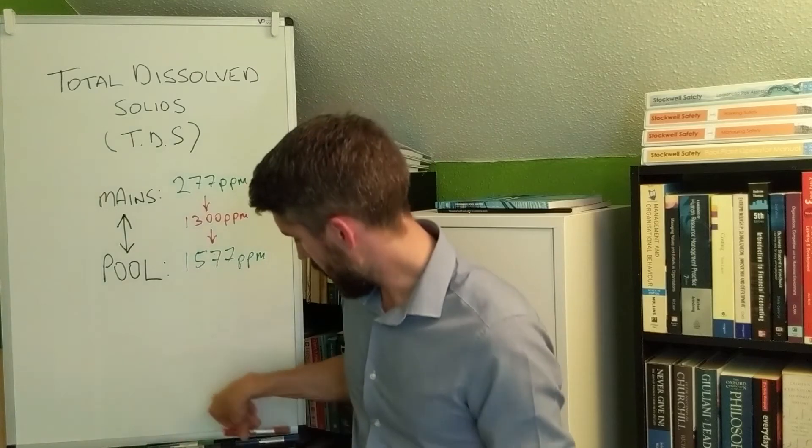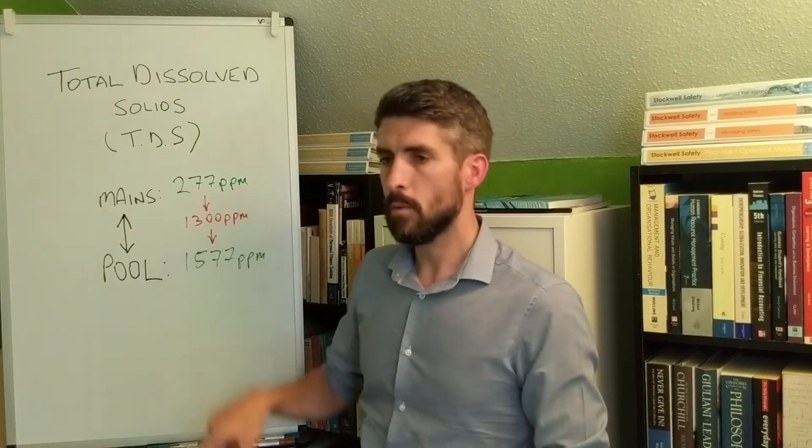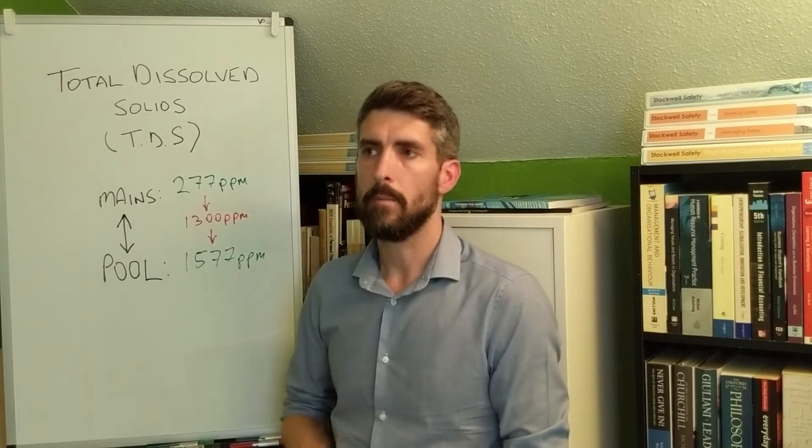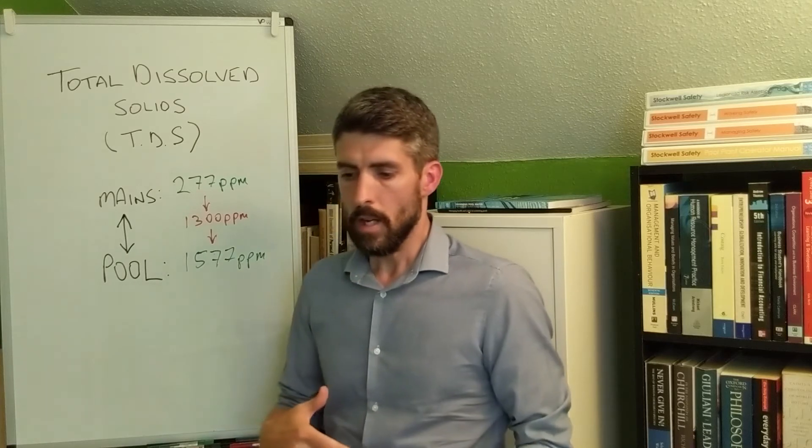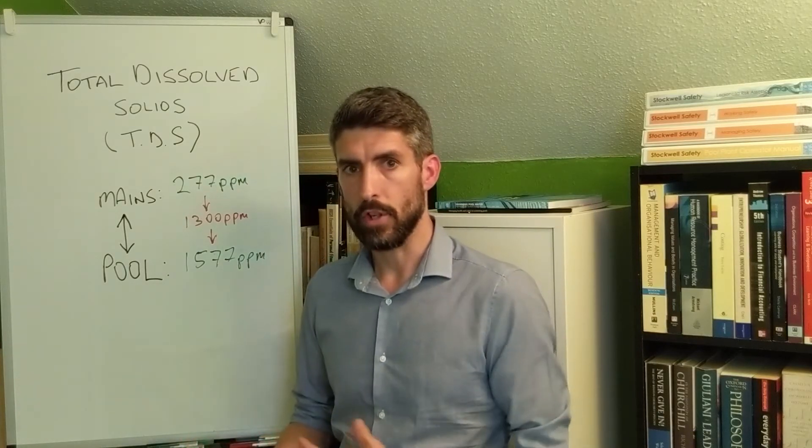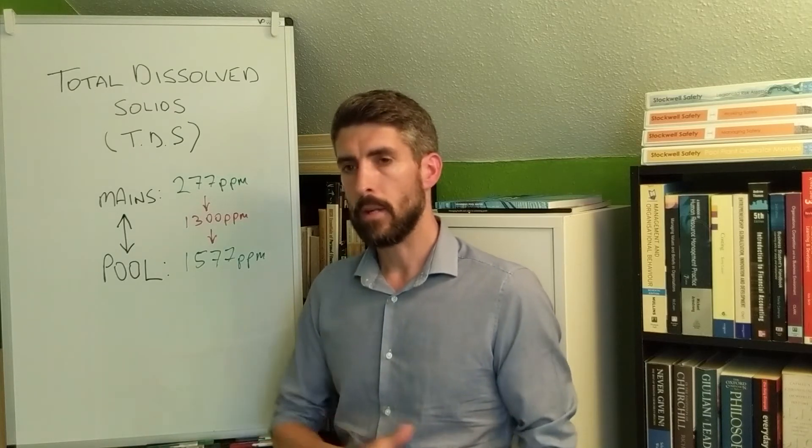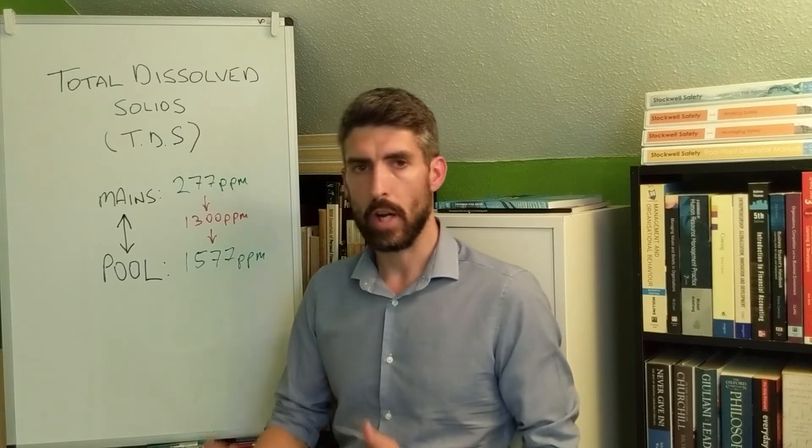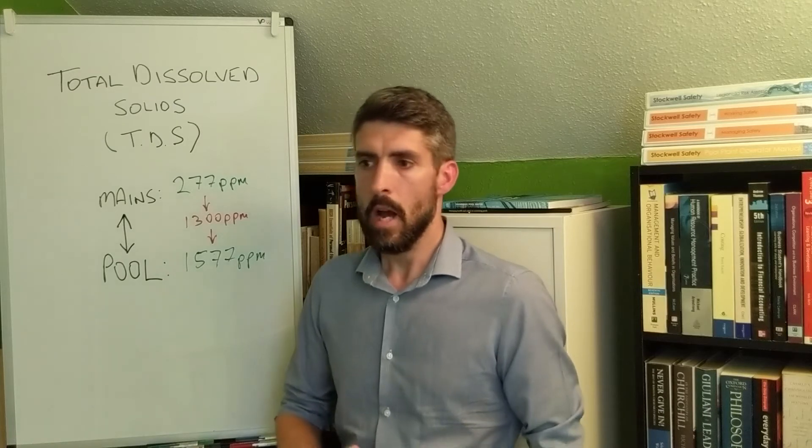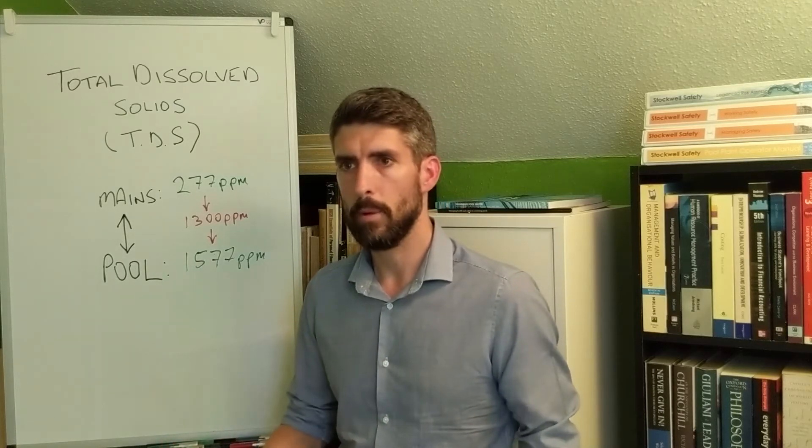So what does that mean? Well, basically you've got to consider what explains this 1300, because some of it will be pool water treatment chemicals such as your chlorine or bromine if you're using bromine, and then whatever chemical you use to adjust the pH level and control that.